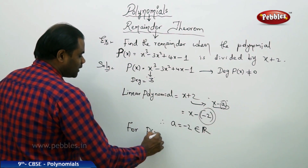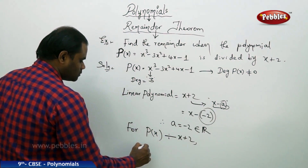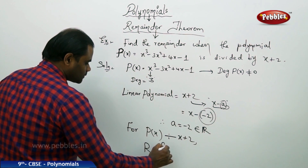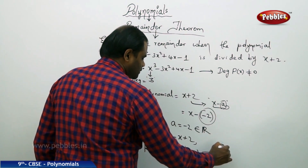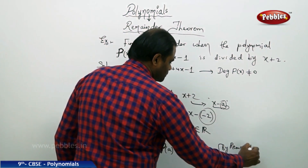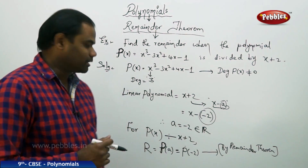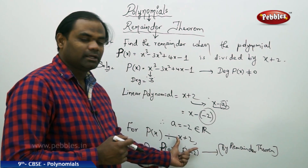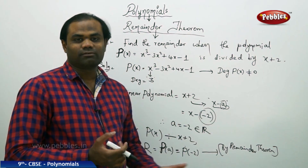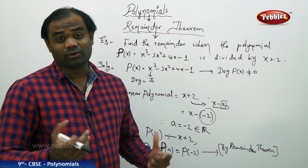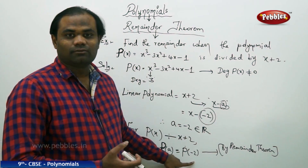Now, for the polynomial p(x) when divided by x plus 2, the remainder is p(a), which is p(minus 2) — this is strictly by the remainder theorem. The remainder theorem clearly says that when a polynomial of non-zero degree is divided by a linear polynomial, the remainder is f(a) or p(a). In this case, a being minus 2, it is p(minus 2). So without any long division process, we can directly find the remainder using the remainder theorem.